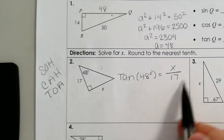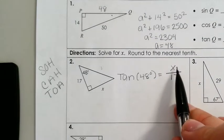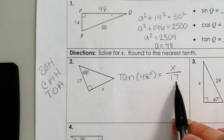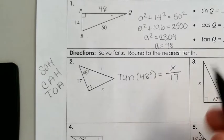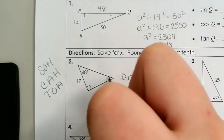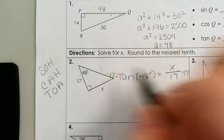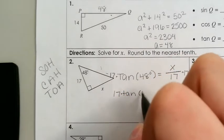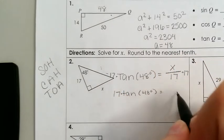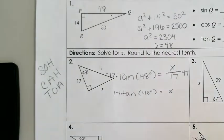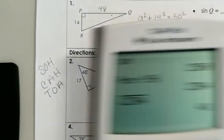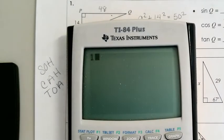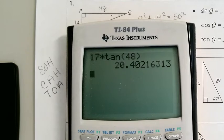To solve for X, we need to get rid of the 17. It's X divided by 17, so the opposite of division is multiplication. We're going to multiply both sides by 17, so 17 times tangent of 48 degrees is equal to X. In your calculator, you're going to do 17 times tangent of 48.